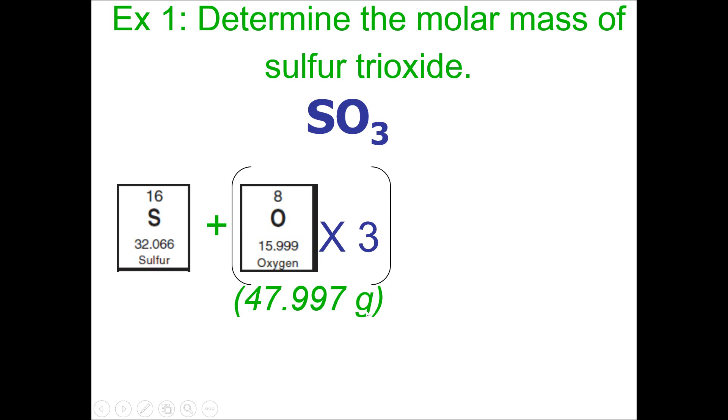And if you did this calculation separately, you would get 47.997 for just the oxygen portion. But you could just type all of this into the calculator at once, and you would get 80.063 grams per mole.